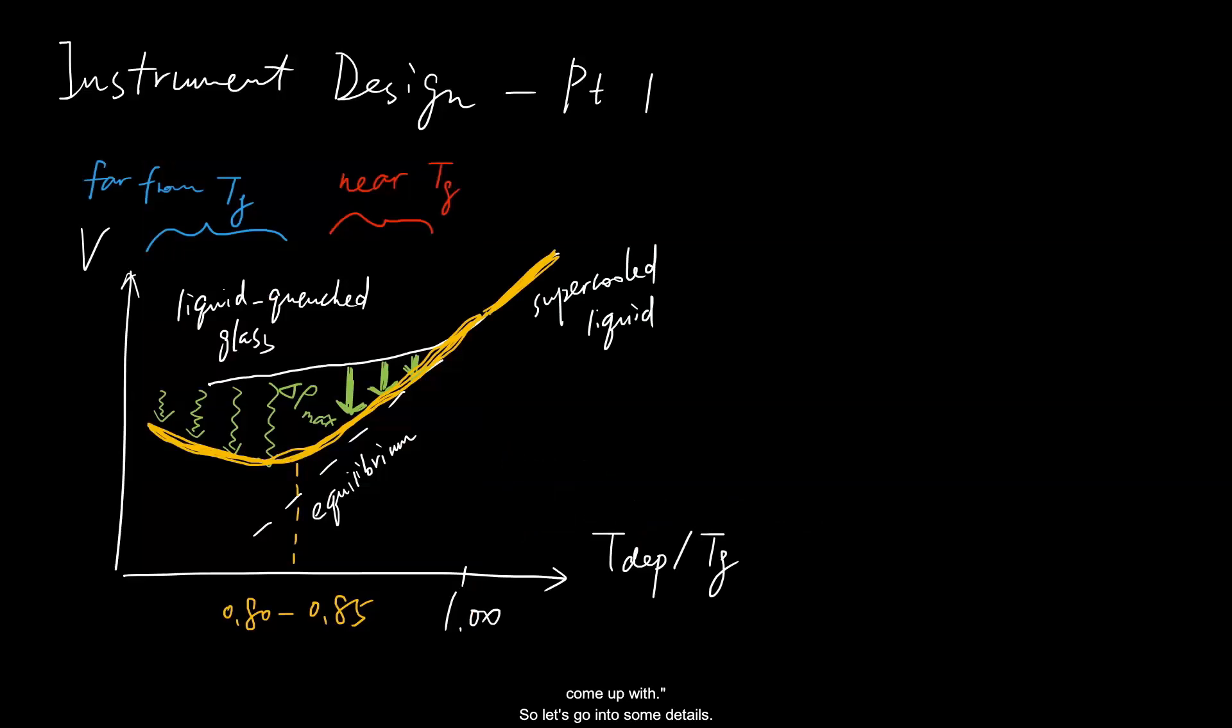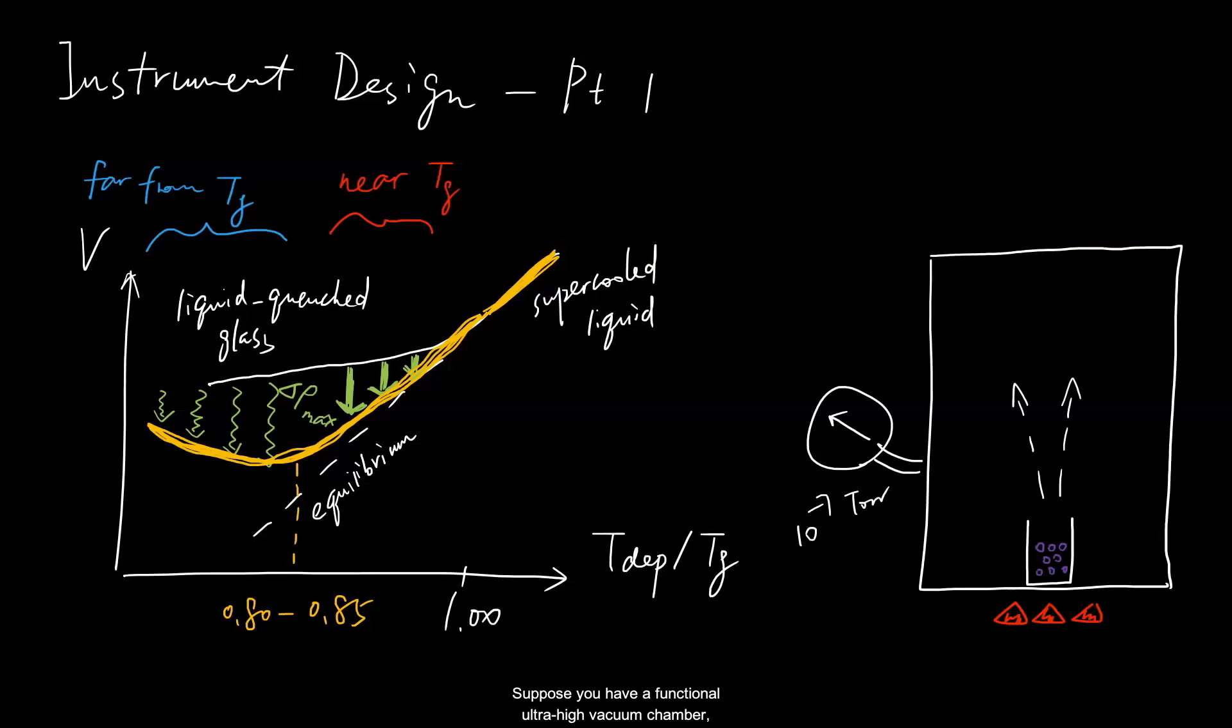So let's go into some details. As you might recall from discussions in our previous video, we know that the density of a vapor-deposited glass depends on the deposition temperature for many glass-forming molecules. Now you wish to examine the effect of deposition temperature on a new glassy system. Suppose you have a functional ultra-high vacuum chamber, and it can be tailored to meet your needs. What would you do if you want to study the effect of deposition temperature on the properties of a vapor-deposited glass? You might say, okay that's straightforward, just control the temperature of the substrate.